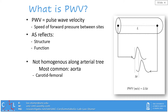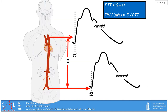The most commonly measured site for pulse wave velocity is the aorta, which we can measure by looking at the speed of the pulse wave between the carotid and femoral arteries. This slide presents a simple diagram demonstrating carotid to femoral pulse wave velocity. The way that we calculate it is by measuring the distance between those two sites and then dividing by the pulse transit time. To measure the pulse transit time we can use different techniques, for example a tonometer which is a pressure transducer.